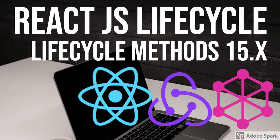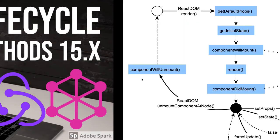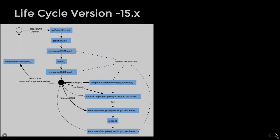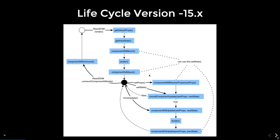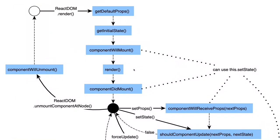We'll start with lifecycle methods because this is an important topic and people have different understandings about the new methods introduced. First, let's look at the older lifecycle methods. The whole lifecycle can be divided into three parts: the mount phase, the update phase, and the unmount phase. In the mount phase, the methods called were getDefaultProps, initialState, componentWillMount, render, and componentDidMount.